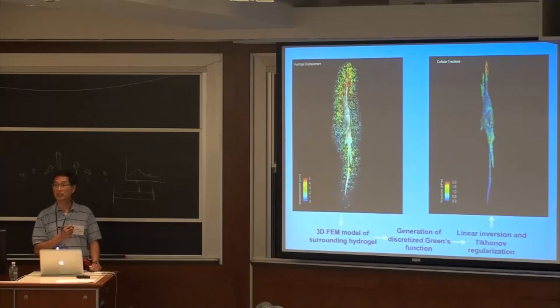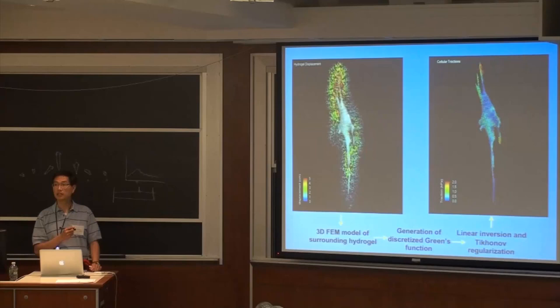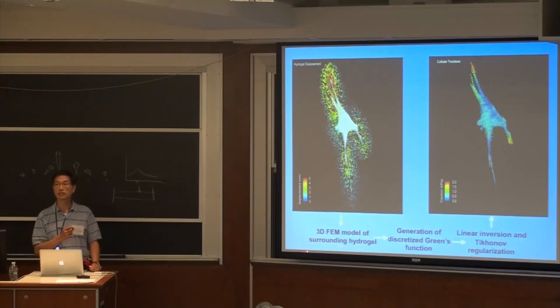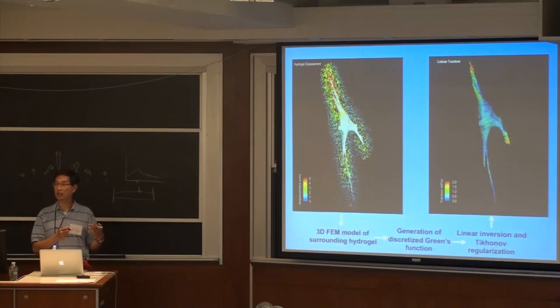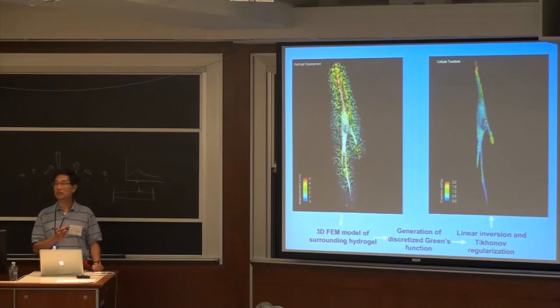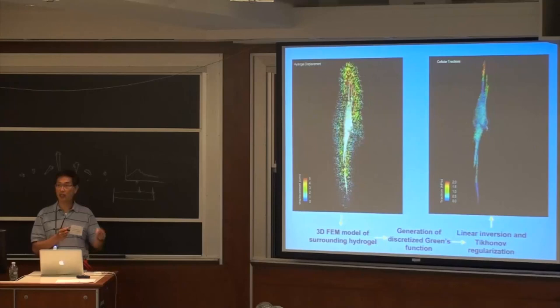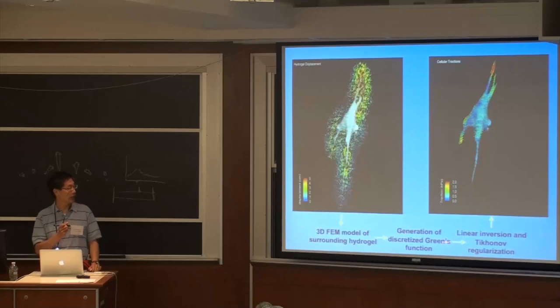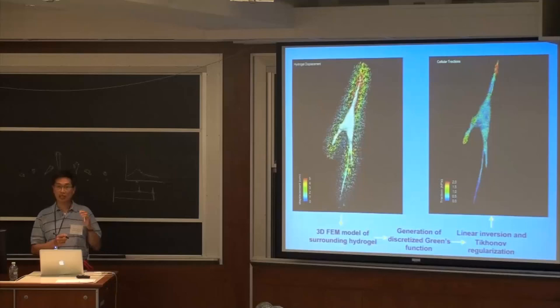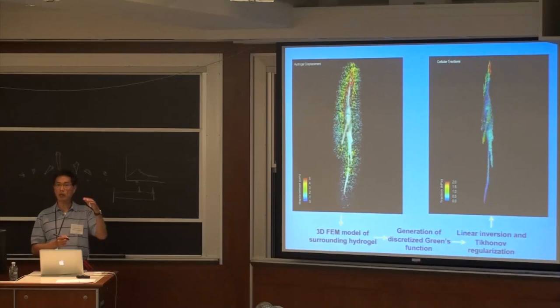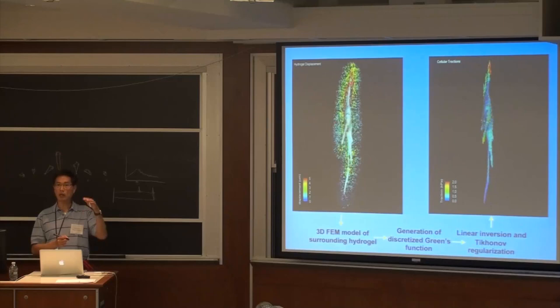Once we have strains, we calculate stresses. We have to generate a finite element model of the surrounding hydrogel because the cell has a unique shape inside the structure — it's a void, and you're pulling on the surface of that void. For the 2D situation it's always a half-space and you generate the model once. But in 3D, for every image, you have to redraw what the cell looks like and regenerate a new finite element model. We know where the void is because our bead density in the gel is high — there are no beads in the cell region, so we trace the voids on every section to build a 3D space. Then you generate the Green's function for that particular geometry and do the inversion to get stresses. It's essentially the same mathematics as 2D, just with a customized Green's function for each geometry.